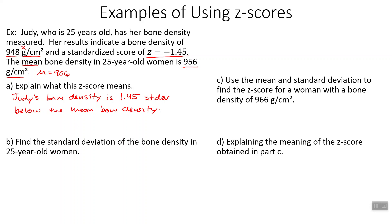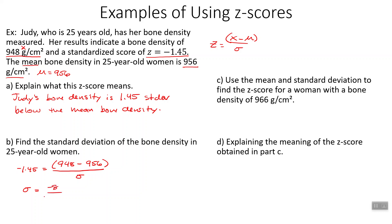Find the standard deviation of the bone density in 25-year-old women. We've got our z formula: z equals x minus the mean divided by the standard deviation. Plugging in: negative 1.45 equals 948 minus 956 divided by the standard deviation. So all we're missing is standard deviation. Multiplying the standard deviation up and dividing over, we get standard deviation equals negative 8 divided by negative 1.45. That gives us 5.517. We don't need to be accurate to three decimal places — one decimal place is probably enough, so we could say 5.5.